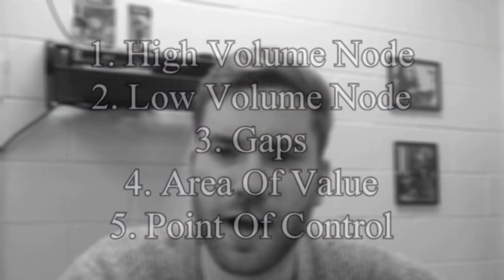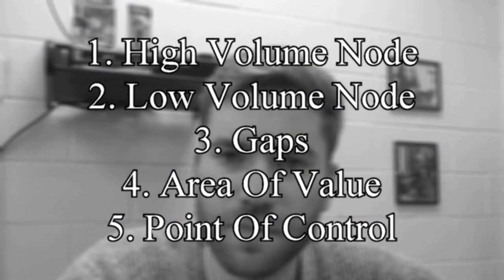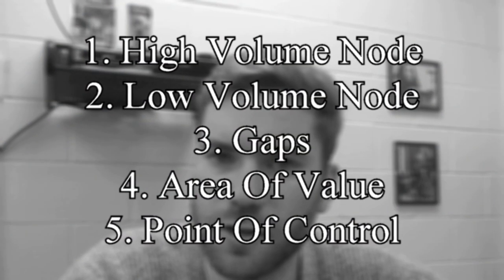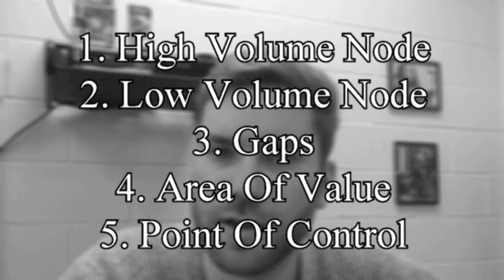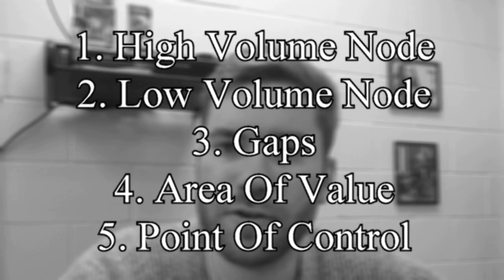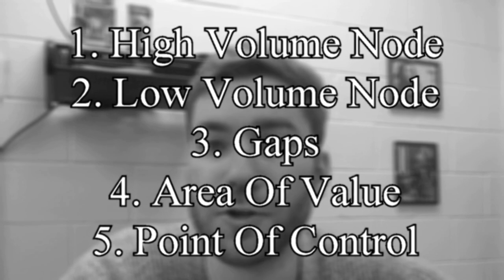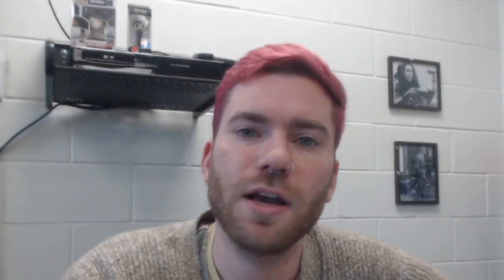Today we're going to cover this. First, we're going to cover the five most basic parts of volume profile: your high volume nodes, low volume nodes, the gaps that they can create, your area of value, and of course our point of control or your POC. All five of those — what do they mean, how do they read — we'll look into it.